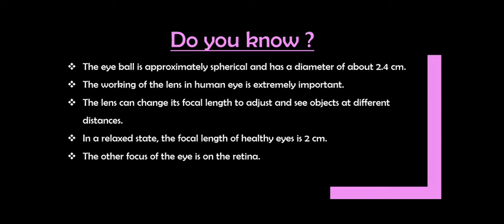Do you know that the eyeball is approximately spherical and has a diameter of about 2.4 cm? The working of the lens in the human eye is very important. The lens can change its focal length to adjust and see objects at different distances. In a relaxed state, the focal length of healthy eyes is 2 cm.